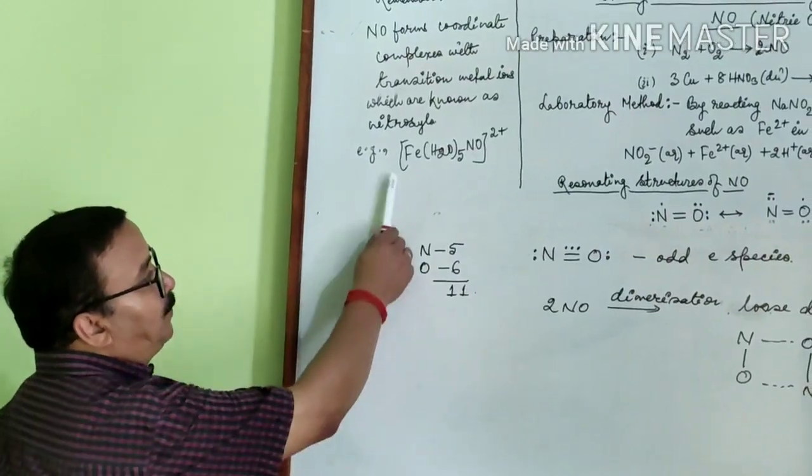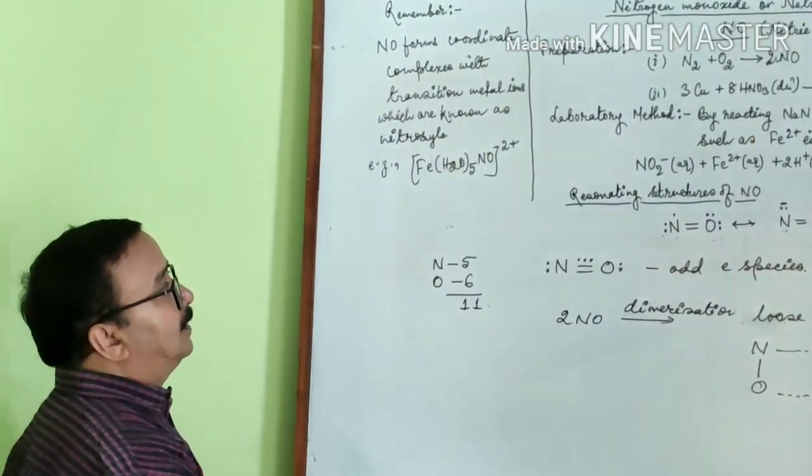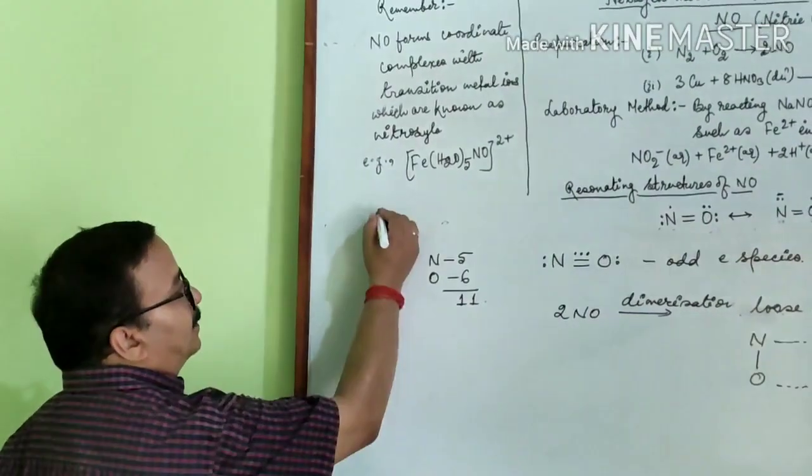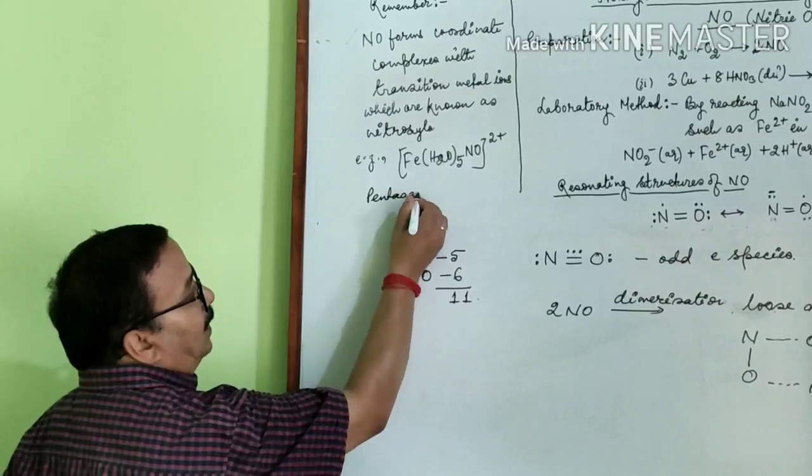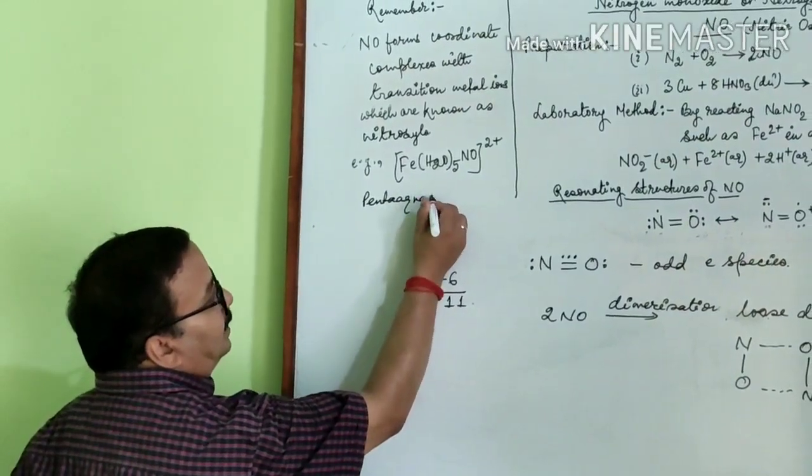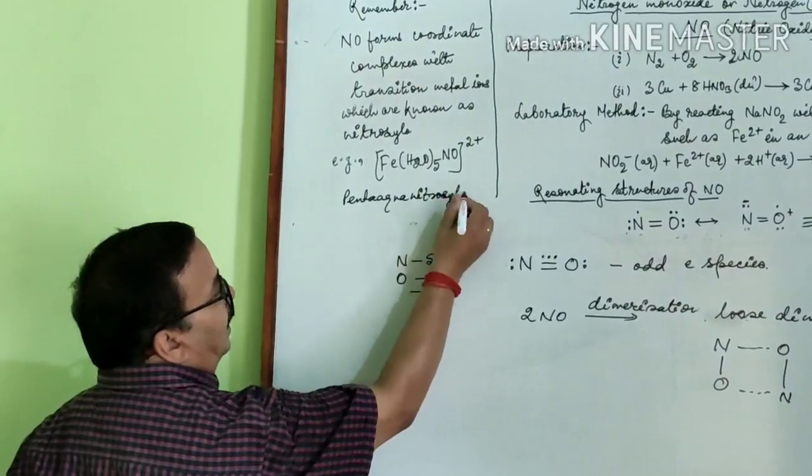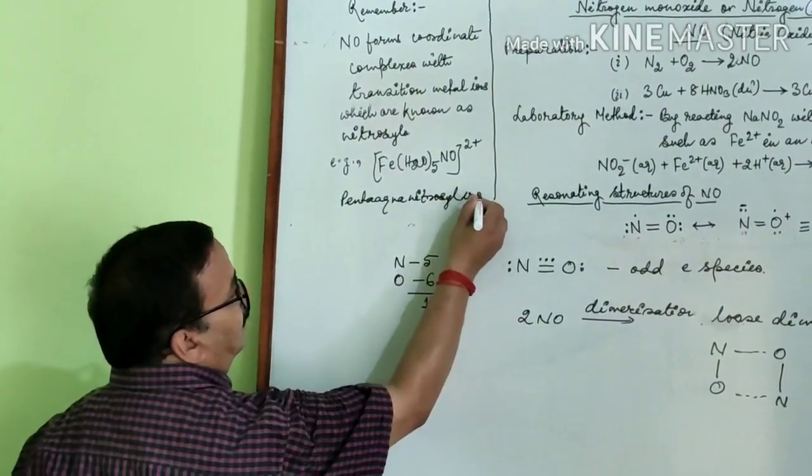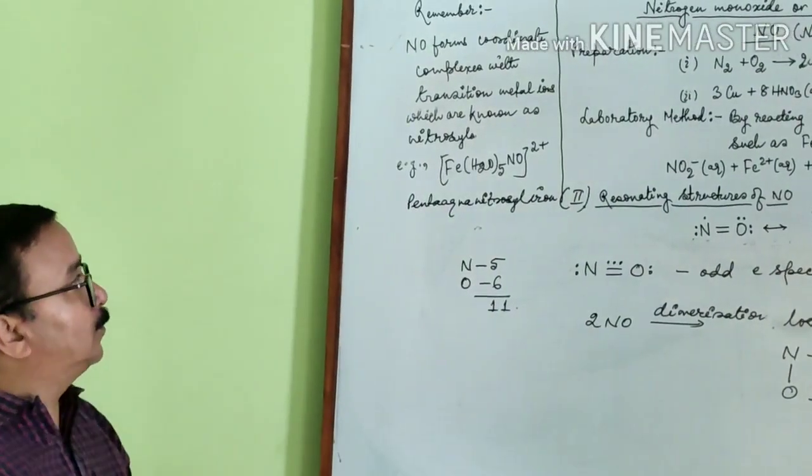For example, Fe(H2O)5(NO)2+. What's the name? It is pentaaqua nitrosyl iron(II).